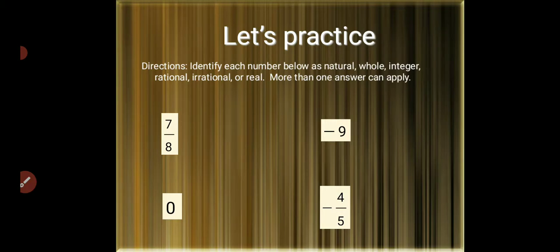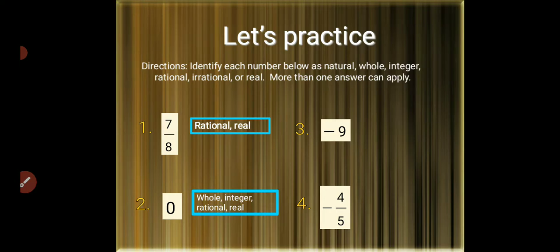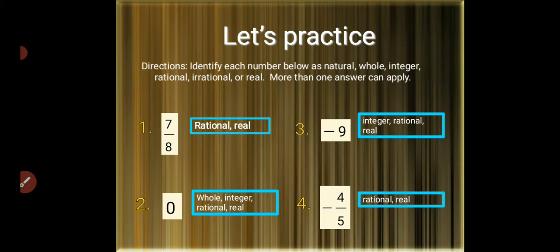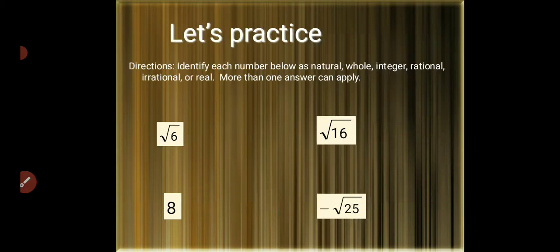Identify each number below as natural, whole, integers, rational, or real. More than one answer can apply. Number 1: 7/8 is rational and real. Number 2: 0 is whole, integers, rational, and real. Number 3: negative 9 is integers, rational, real. Number 4: negative 4/5 is rational and real. 0.3 is also included.